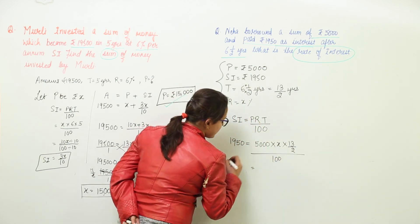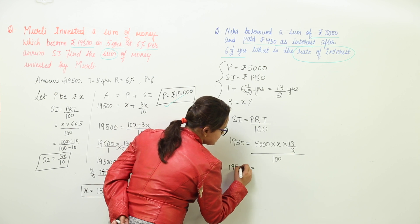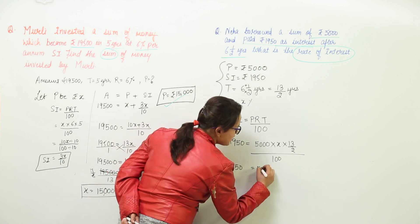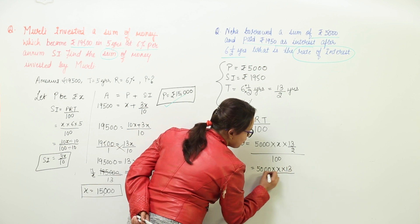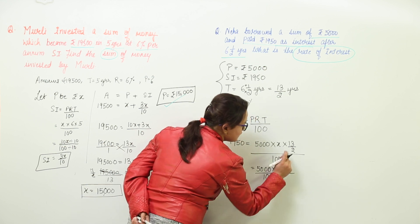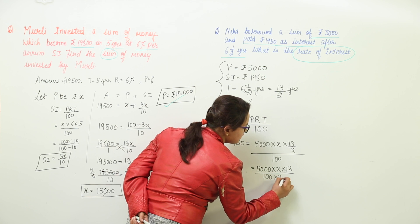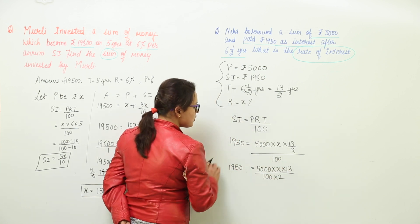So let us simplify it further. We get 1950 equal to 5000 multiplied with X multiplied with 13 whole divided with 100. Now this 2 gets multiplied with this 100 in the denominator. We will solve this further.